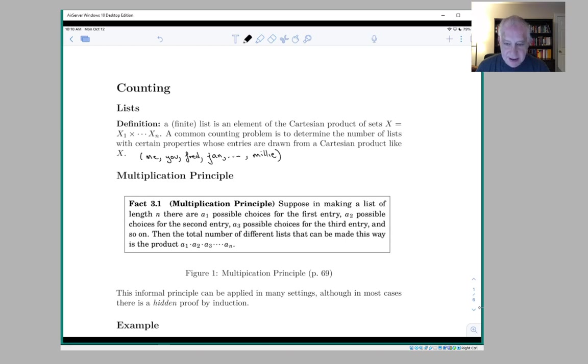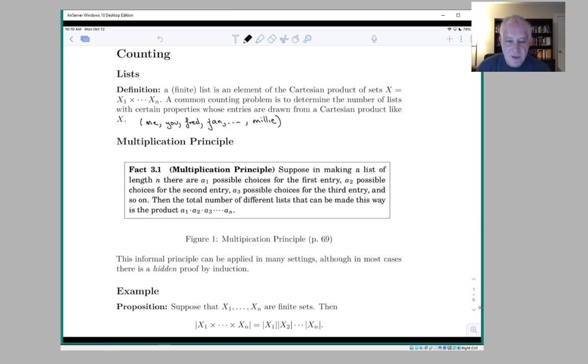And the multiplication principle, which is stated as a fact way back in chapter three, says that if you're making a list of length n, and you have a1 possible choices for the first entry, and a2 possible choices for the second entry, and a3 possible choices for the third entry, and so on, then the total number of lists that you can construct is the product of those numbers.